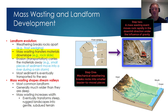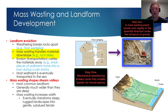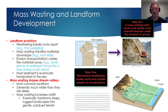The next stage of landform evolution is mass wasting — the transfer of materials downslope due to the influence of gravity. Those broken pieces of rock that formed during frost wedging may now rapidly fall down a cliffside as a rock slide. The rock slide is an example of a mass wasting event where material moves from a higher location to a lower location under the influence of gravity.